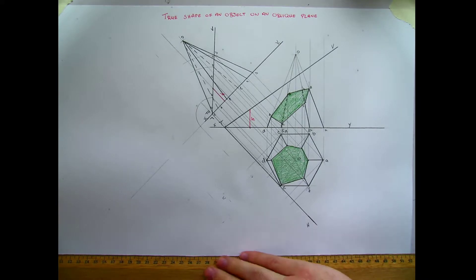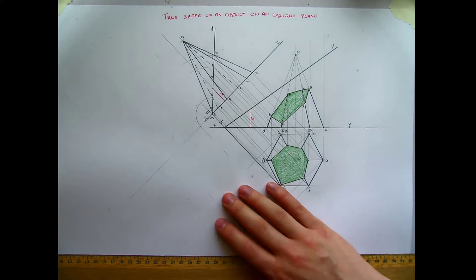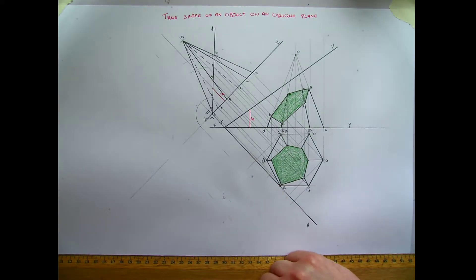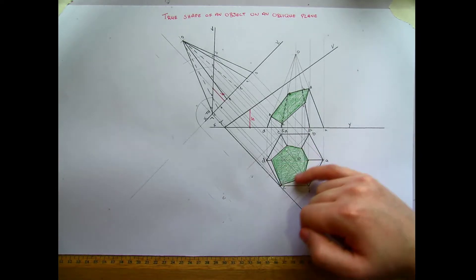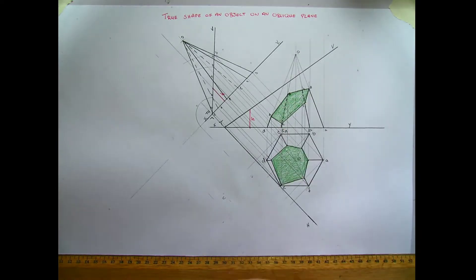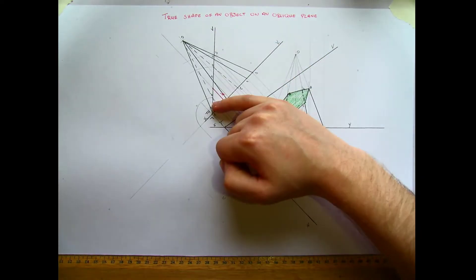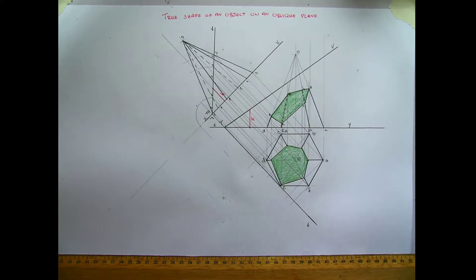What we're going to do now is just look at the second part of it, which I described at the start of the last video, which is to find the true shape of an object on an oblique plane. So we have our object, it is the green surface, and that has been cut by the oblique plane VTH, which we can see in the elevation and the auxiliary elevation and plan.